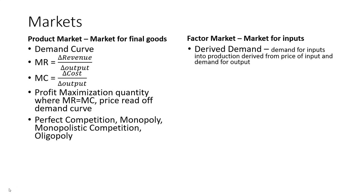But what happens if the wage goes down to $0.50 an hour, but your demand for your water bottles is high? All of a sudden, just because the demand doesn't change but the price of labor changes, your desire to hire workers is going to change dramatically. Since we're now using a derived demand, we need to take into account not only what's happening in the factor market, but we also need to understand what's happening in the product market.